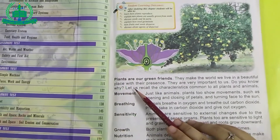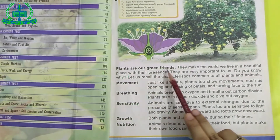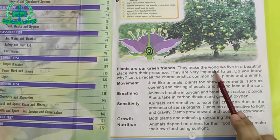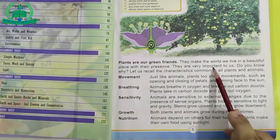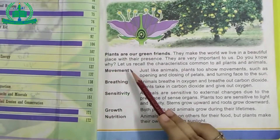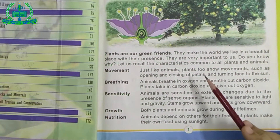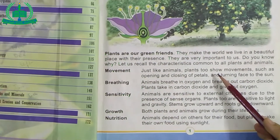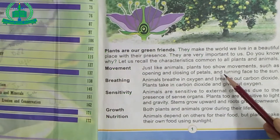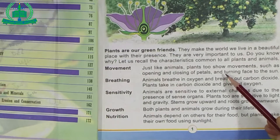Let me explain. First we read this topic, then I explain. Plants are our green friends. They make the world we live in a beautiful place with their presence. They are very important to us. Do you know why? Let us recall the characteristics common to all plants and animals. As we know, Allah gave us millions of plants. The characteristics of plants and animals are common.